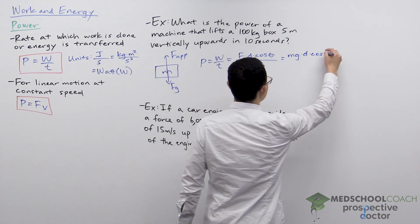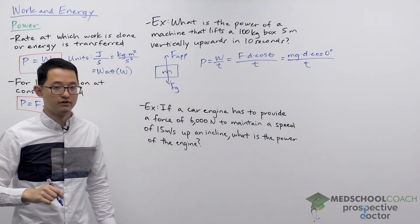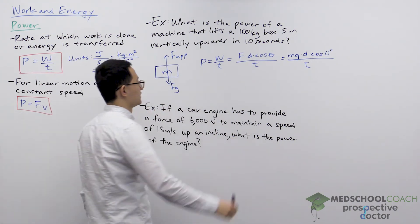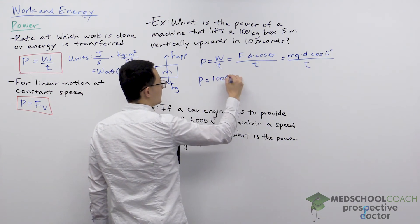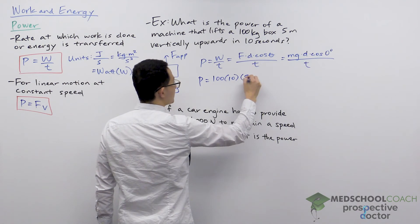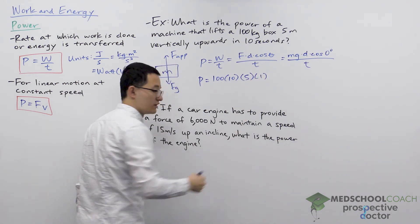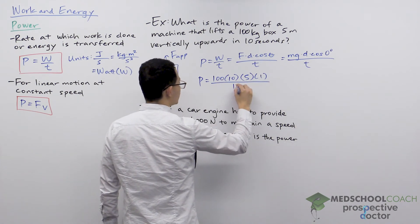So theta is zero degrees, divided by the time, which we do know the value. So now let's go ahead and plug in the numbers. This will give us the mass of 100, gravity, which is 10, displacement, which is five meters, cosine zero is equal to one, divided by the time of 10 seconds.